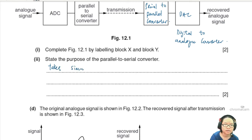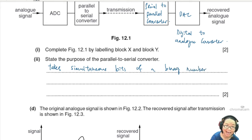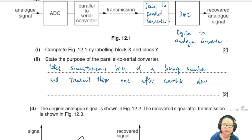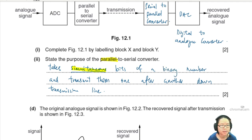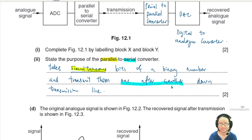State the purpose of the parallel-to-serial converter: it takes simultaneous bits of a binary number and transmits them one after another down the transmission line. 'Parallel' means simultaneous; 'serial' means one after another — like in a series circuit where current passes through components one at a time.